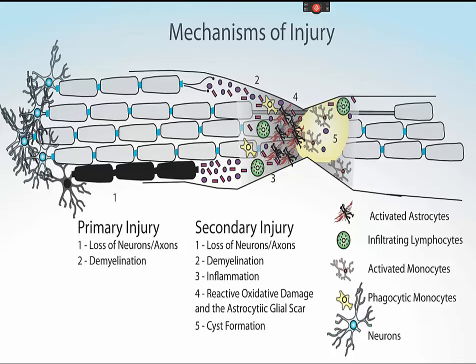Typical treatment goals are decreasing inflammation, slowing degradation and cell death, increasing blood flow, and reducing scar formation. Initial treatment of spinal cord injury is focused on stabilizing the injury. After that's been accomplished as much as possible, additional treatment goals include transplanting nerves or nerve regeneration.